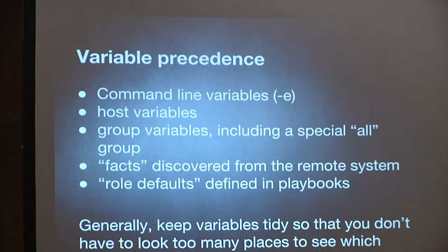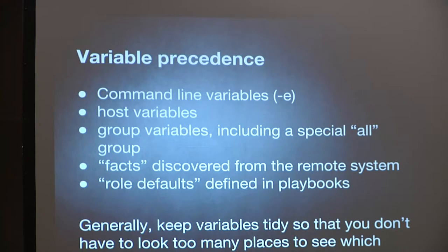Variables have a well-defined precedence order. At the top are command line variables — those override everything. Then host variables, then group variables like 'all', and then facts discovered from the system itself using the setup module. Facts are collected on every Ansible playbook run unless you disable it.